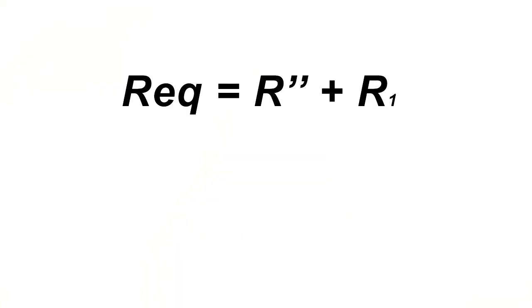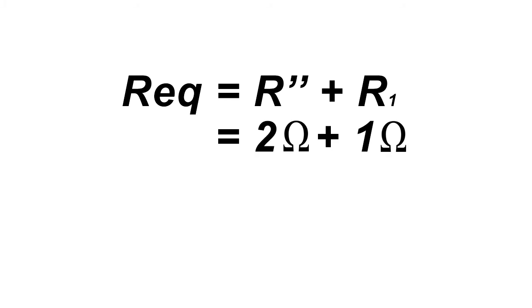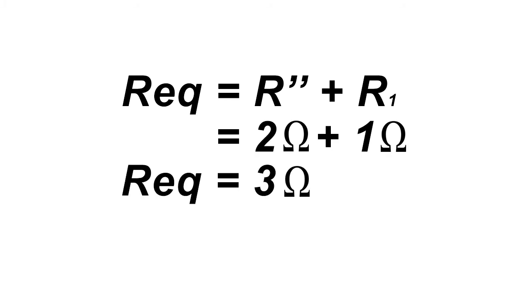With that, we are left with 2 resistors which we can combine to find the R equivalent. R equivalent equals R2' plus R1, which equals 2 ohms plus 1 ohm. So, the R equivalent equals 3 ohms.